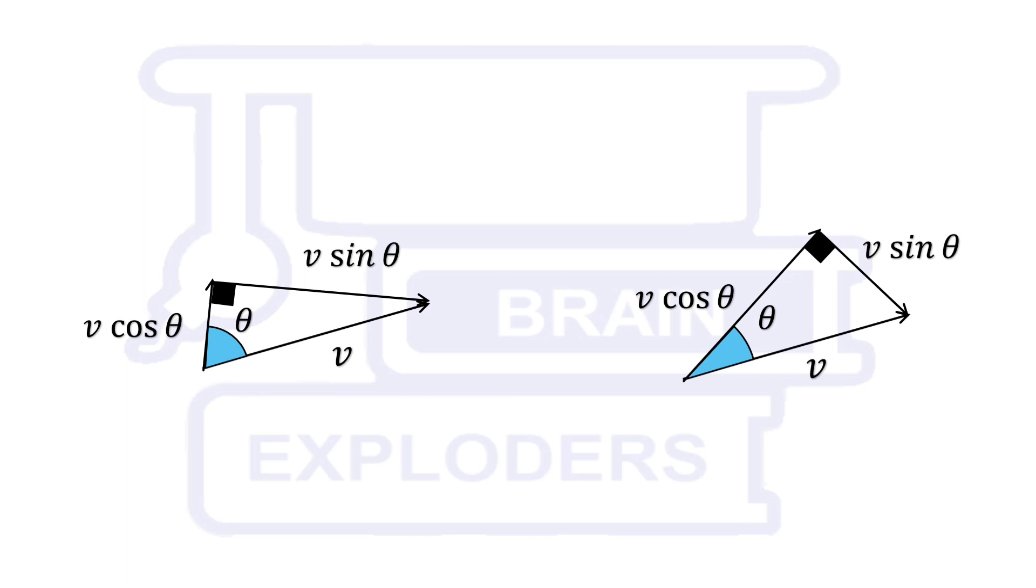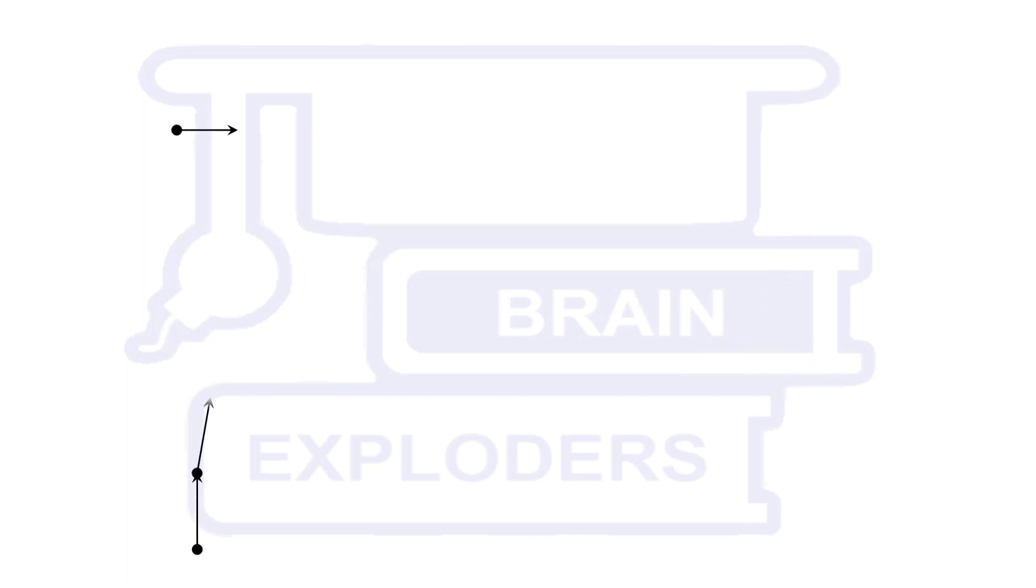In the given problem, direction of one ship is changing continuously. It is aimed towards the other ship. Since its speed is more than the other one, it will definitely collide with the other ship.